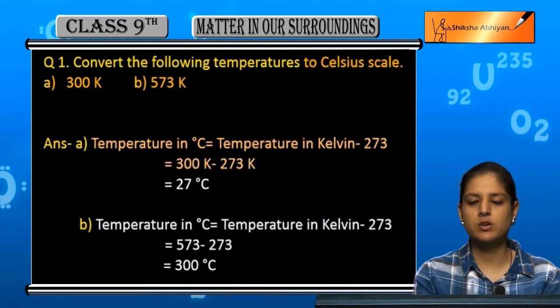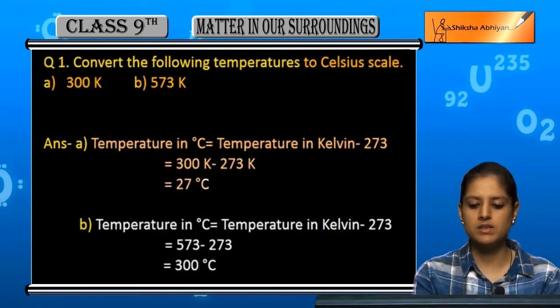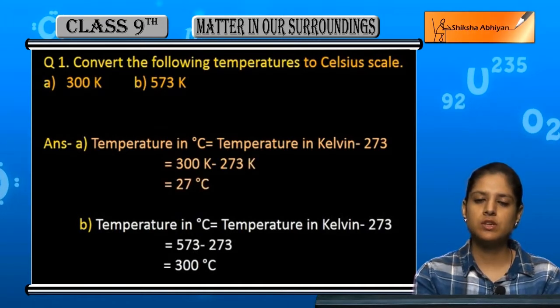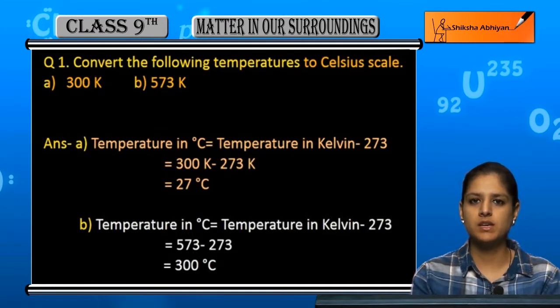If we have 300 Kelvin minus 273, then we have 27 degrees Celsius. So 300 Kelvin is equal to 27 degrees Celsius.